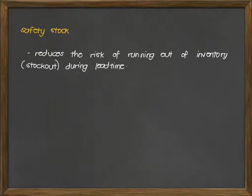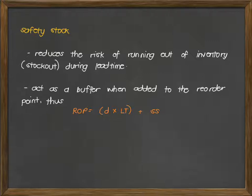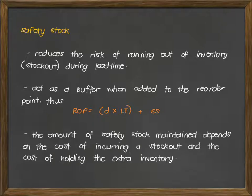Safety stock reduces the risk of running out of inventory or stock out during lead time. It also acts as a buffer when added to the reorder point. Our reorder point formula becomes D times LT plus SS, or the safety stock. D is your average demand and LT is your lead time. The amount of safety stock maintained depends on the cost of incurring a stock out and the cost of holding the extra inventory.